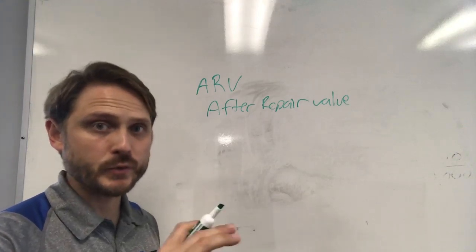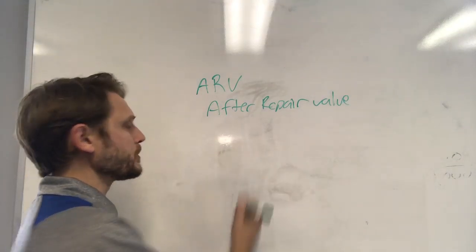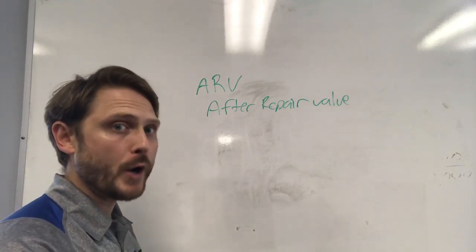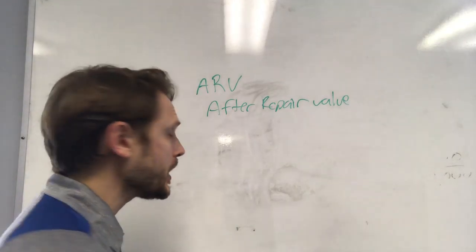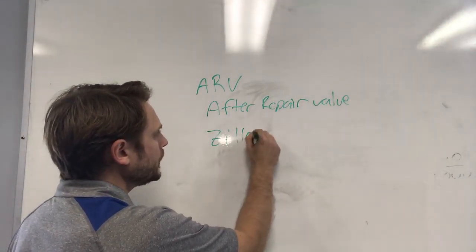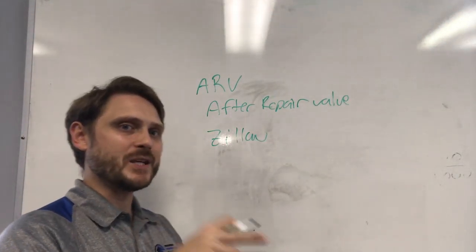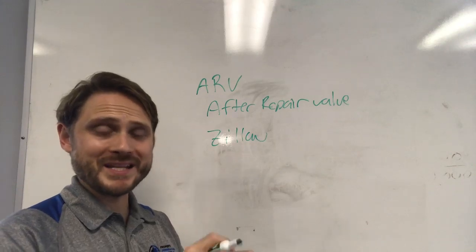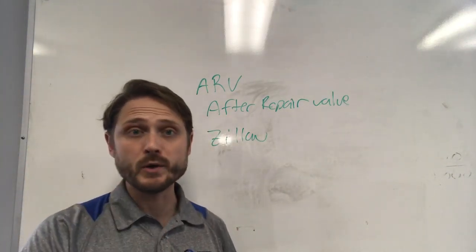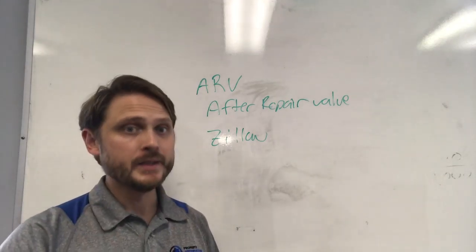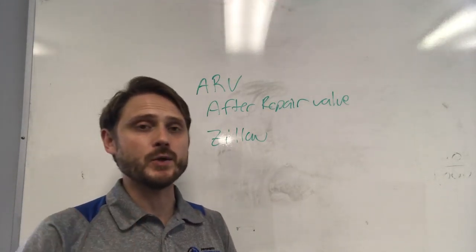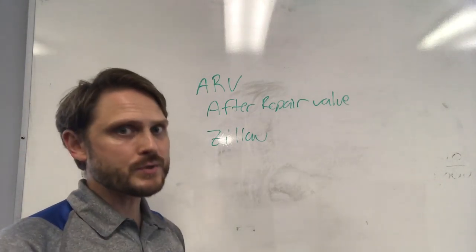We're going to go to a place — I'll do another video on what places to go to find this information — but where I usually go is Zillow. Once you type in the address of the property in Zillow, on the right-hand side on the computer version (not the phone), it's going to have a list of properties that have recently sold that are similar.